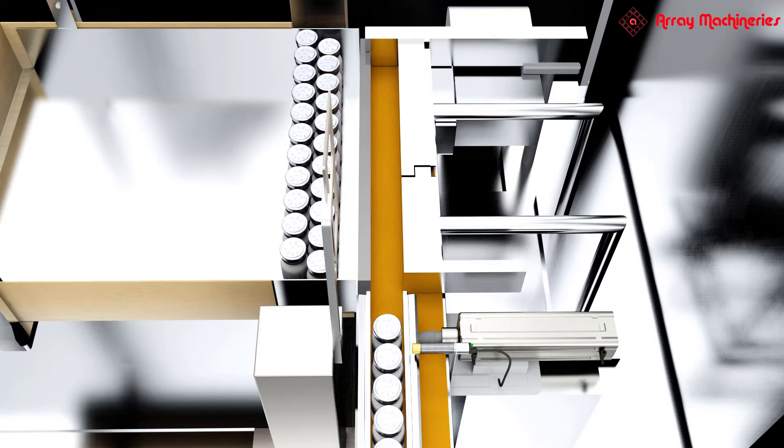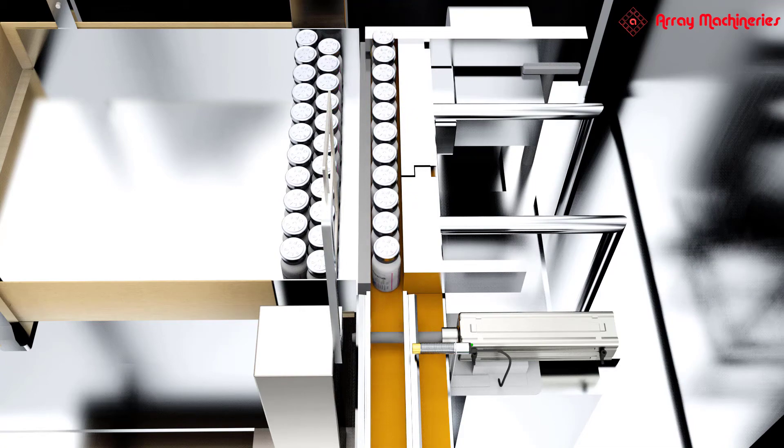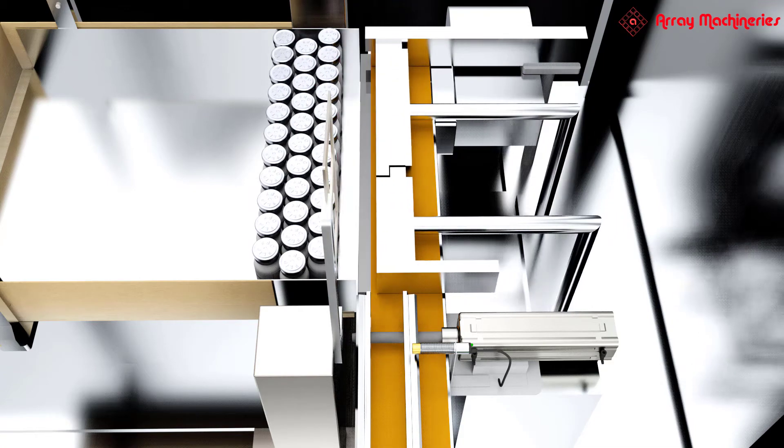Once the pusher reaches the tray, the servo conveyor starts again and sensor and stopper 1 let pass the next vials.